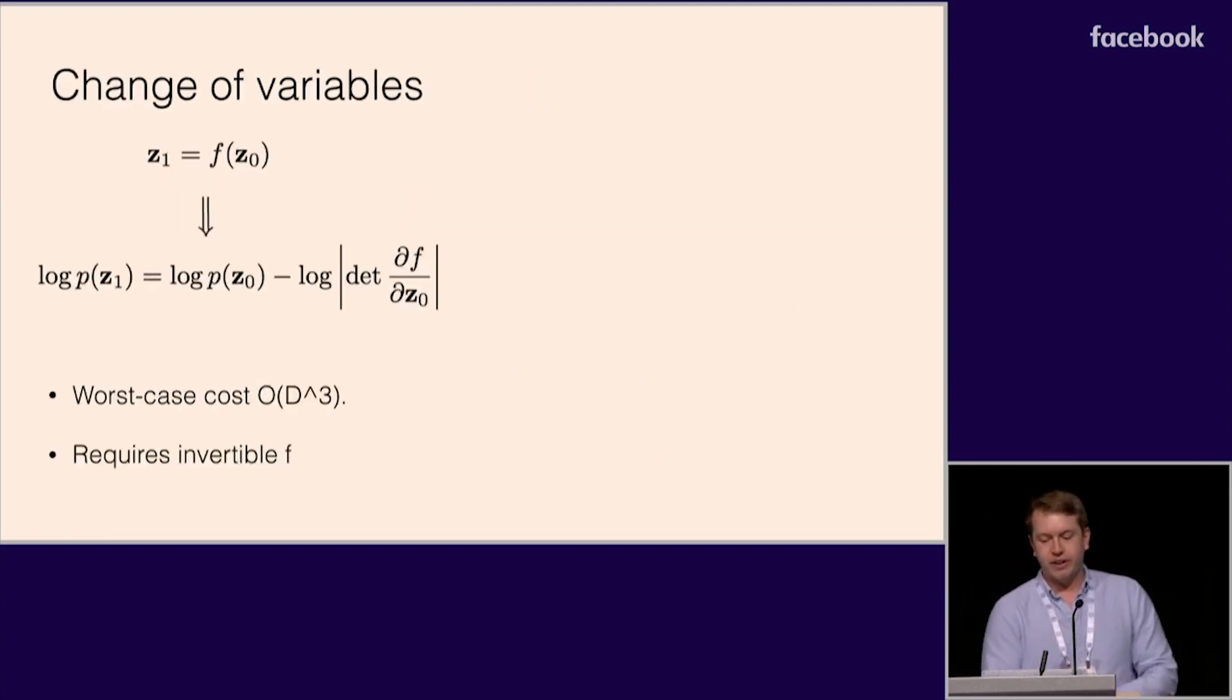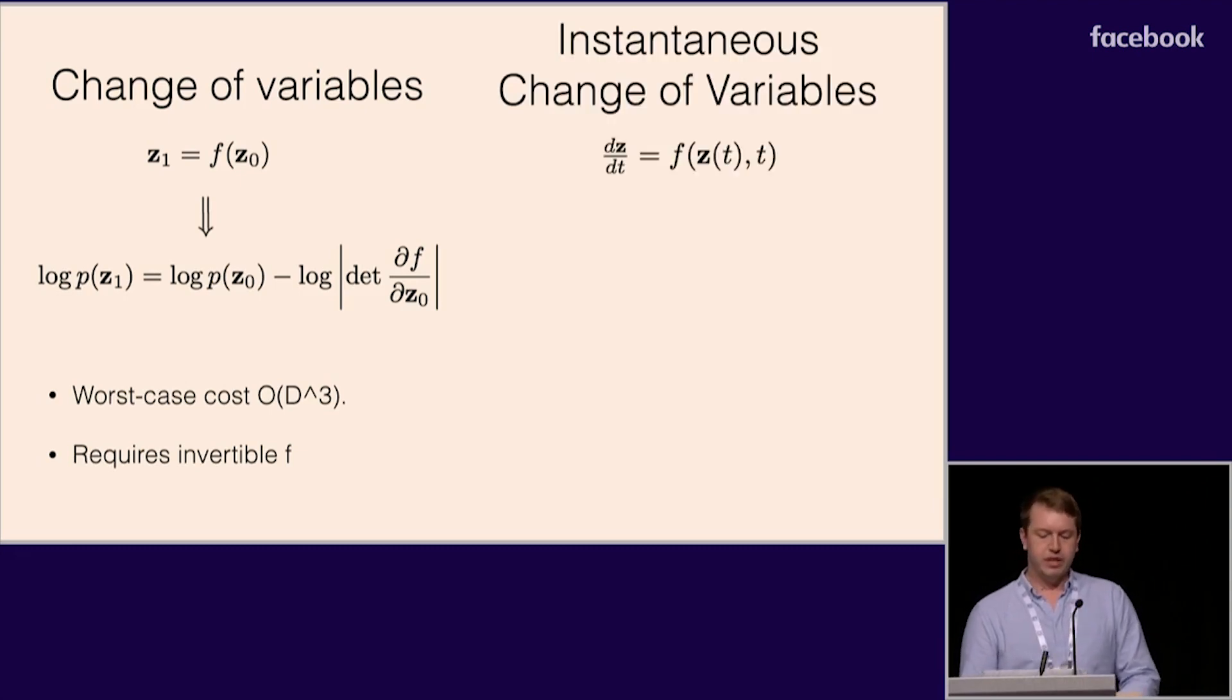So the biggest benefit so far to moving to continuous time turned out to be for density modeling. The foundation of models like normalizing flows or Real NVP is the change of variables formula. It says that the change in density due to mapping through a function is given by the determinant of the Jacobian of that function. But what if we make an instantaneous or an infinitesimal change to a variable, then how does the density change with time? In our paper, we proved that the derivative of the log density with respect to time, or depth, is given by the trace of the Jacobian. We call this the instantaneous change of variables formula.